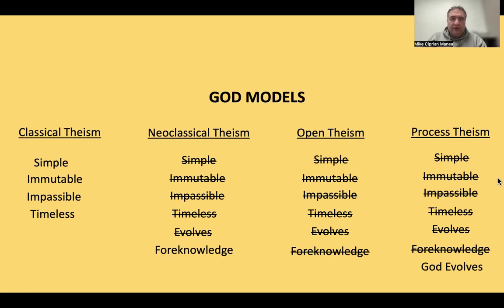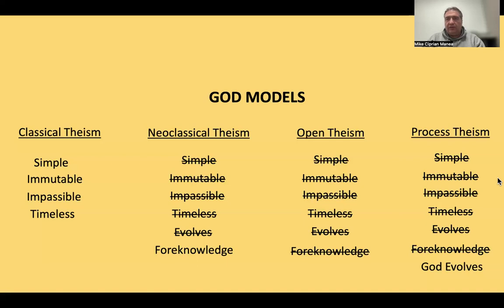These are the four common God models in Christianity. We have classical theism, which is more or less the historical position. There's always been people that have disagreed with it, but it represents what most Christians believed over the millennia and has influenced most of Christian theology. In classical theism, God is very static — unchanging, perfect as he is, not needing to do anything else, nothing affects him. God has always been and will always be the same.